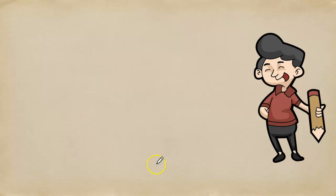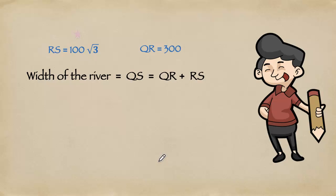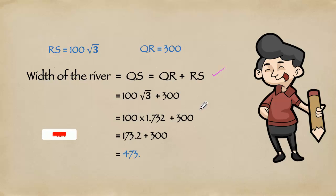Now we got RS as well as QR. Now we have to find width of the river. Width of the river equals QS equals QR plus RS, which equals 100 root 3 plus 300. 100 into the value of root 3 is 1.732 plus 300. 173.2 plus 300. That is 473.2 meter. This is the width of the river.